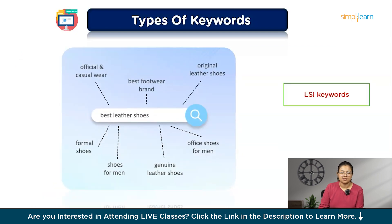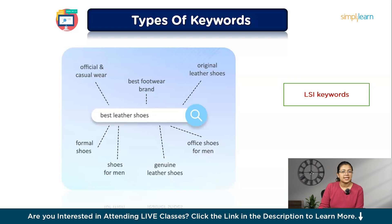The next type of keyword is LSI, which stands for Latent Semantic Indexing keywords. These are related terms that search engines consider relevant to your main keyword. For example, if your main keyword is 'digital marketing,' LSI keywords could be 'online marketing,' 'SEO strategies,' or 'social media advertising.' Similarly, for 'best leather shoes,' LSI keywords could include 'formal and casual wear,' 'best footwear brand,' or 'genuine leather shoes.' Using LSI keywords helps you create more contextually relevant content that search engines favor. By balancing these types of keywords, you can create content that appeals to both broad and niche audiences, giving your website a better chance to rank well across different searches.